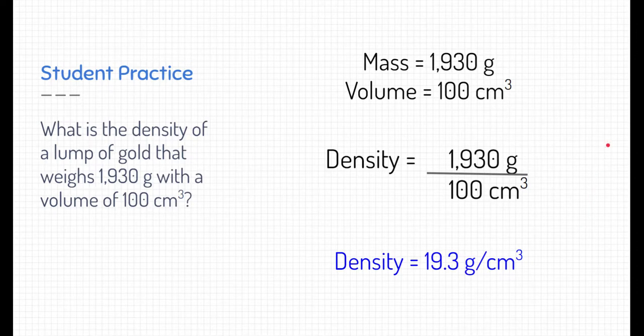I want to take a moment and point out the unit of density is a derived unit made of both mass and volume. So the unit of density is grams per centimeter cubed, or it could be grams per milliliters. Either way, this is how we designate the unit of density.